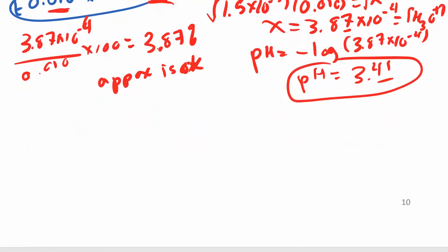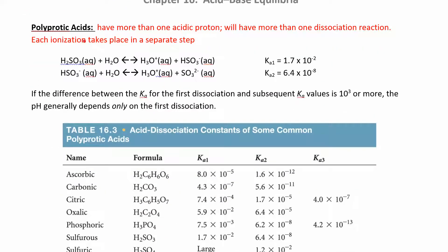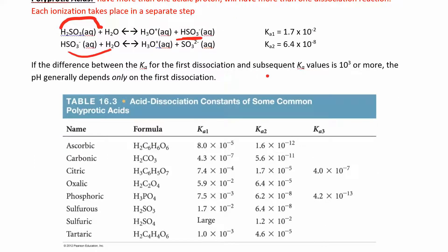So far we've just looked at monoprotic weak acids — one proton coming off at a time. But we also have polyprotic acids, where more than one acidic hydrogen comes off. For something like H₂SO₃, you have two hydrogens, so you pull off one hydrogen at a time — two ionization reactions. The first one gives hydronium and HSO₃⁻, and then that undergoes another ionization. Most of the hydronium comes from the first step. You can have monoprotic, diprotic, or triprotic acids.